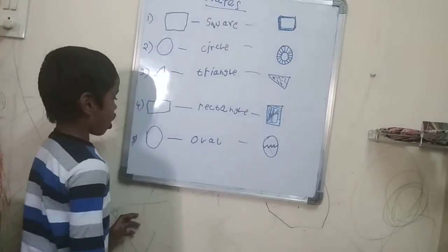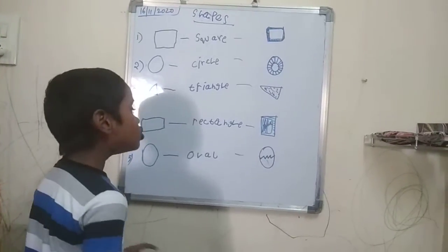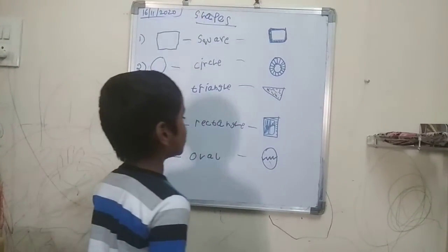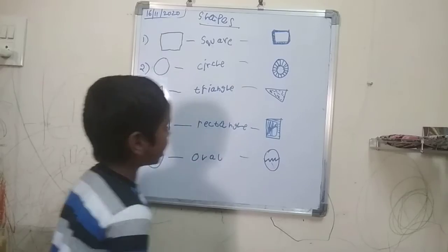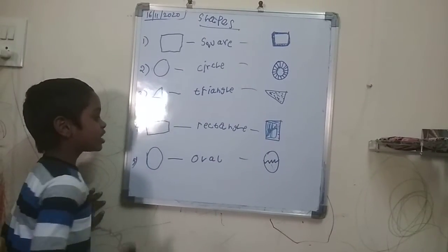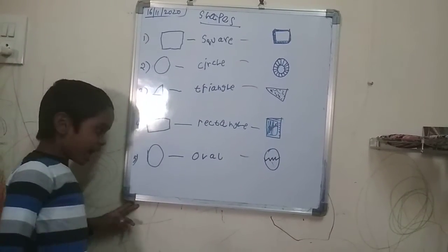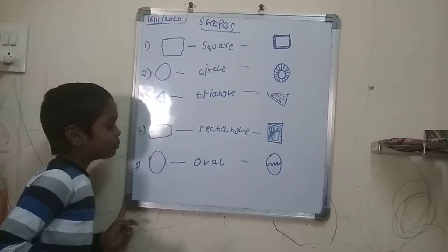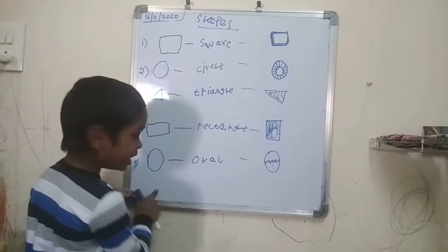Next, oval. Ovals have no corners, no sides. They look like an egg. We can eat it. Oval, please.